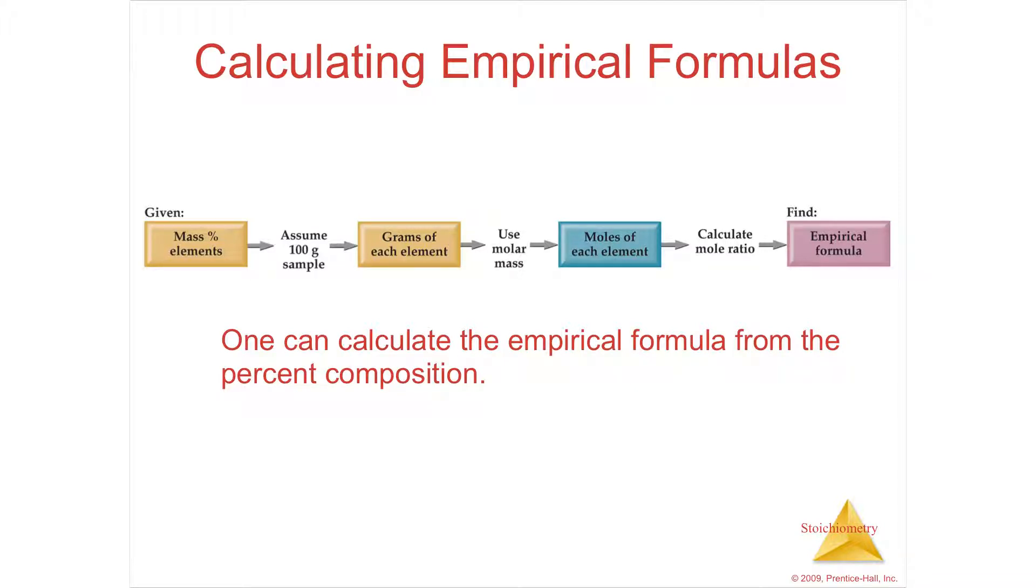So what we're going to do is we're going to have the percentage of elements. They're going to say, in a certain sample, you're going to have so many percent this, so much percent that, and you're going to take the percentage and assume a 100 gram sample. That way the percentage can simply turn into grams. Once I have grams, I go through the periodic table.